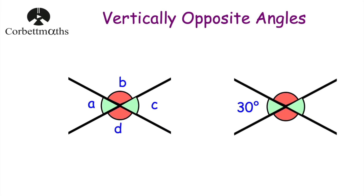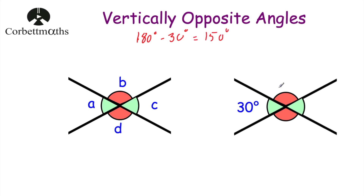Let's have a look and see why they're equal to each other. Here we've got another diagram and I've marked in one of the angles as 30 degrees. Let's find the other three angles and show that the opposite angles are equal to each other. If this is 30 degrees, you can see here we've got a straight line, and the angles in a straight line add together to be 180 degrees. So if we take 30 degrees away from 180 degrees we get 150 degrees. So this angle would be 150 degrees.